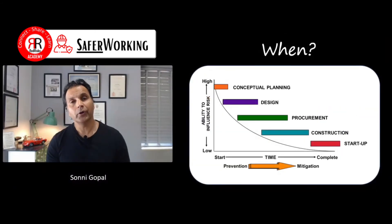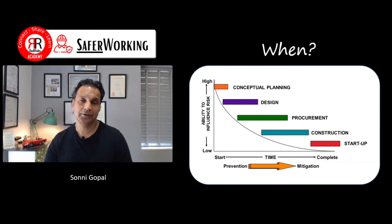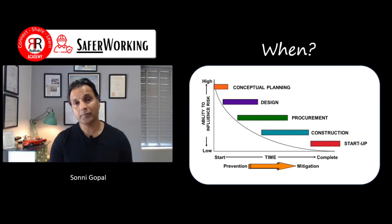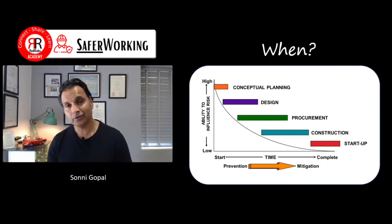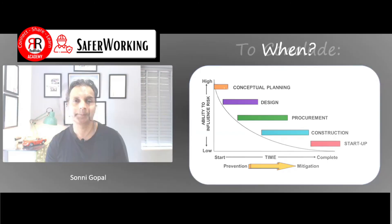When to do it? Well, your best opportunity and greatest ability to influence risk reduction is right at the early stages — from conceptual planning. As it goes further down the chain towards design, procurement, construction, and startup, your opportunity to influence becomes less, and it shifts more from prevention to mitigation. So, the early bird catches the worm. If you can get it right at the front end, back at conceptual planning, that's the best time.